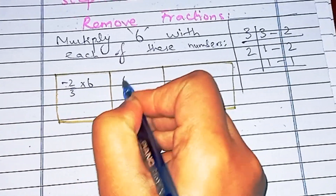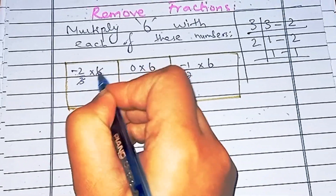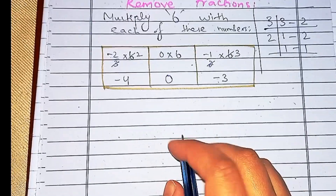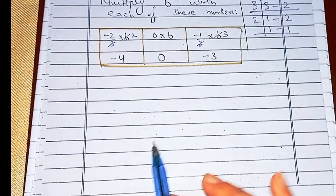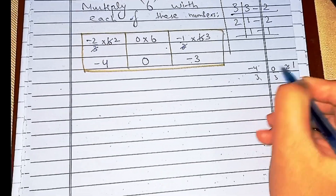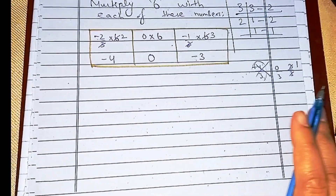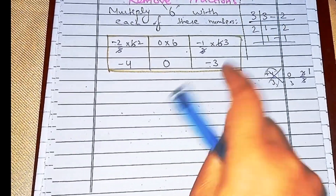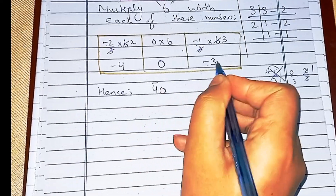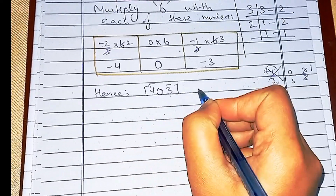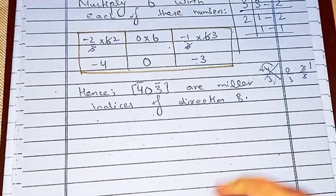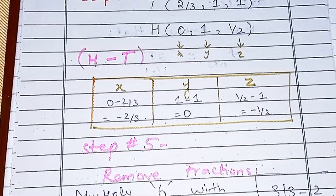So: −2/3 × 6 = −4, then 0 × 6 = 0, and −1/2 × 6 = −3. These numbers are in least integer form because they cannot be reduced further — dividing by any common factor would introduce fractions. These are the final indices. Since negative values get a bar notation, the Miller indices of direction B are [4̄ 0 3̄] — we write the x index first, then y, then z. That's it for this video. We'll cover direction C in the next video, and the link to direction A will be in the comment section.